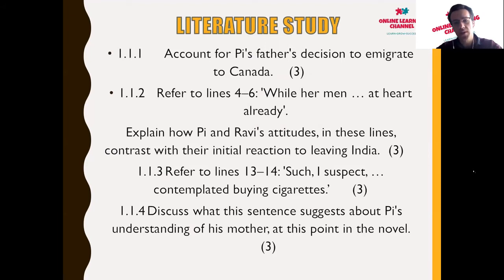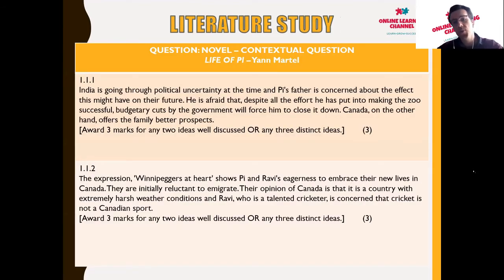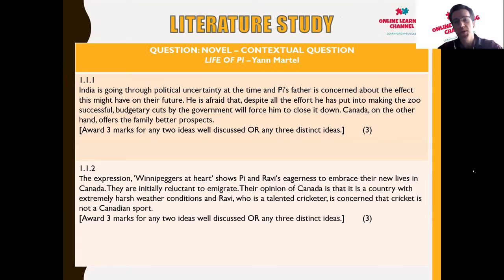Question two refers to lines four to six — 'while her men, Winnipeggers at heart already' — and asks how Pi and Ravi's attitudes contrast with their mother's reaction to leaving India. The expression 'Winnipeggers at heart' shows Pi and Ravi's eagerness to embrace their new lives in Canada, though they were initially reluctant to immigrate. Their concern about Canada was its extremely harsh weather conditions, and Ravi — a talented cricketer — was worried that cricket is not a Canadian sport.